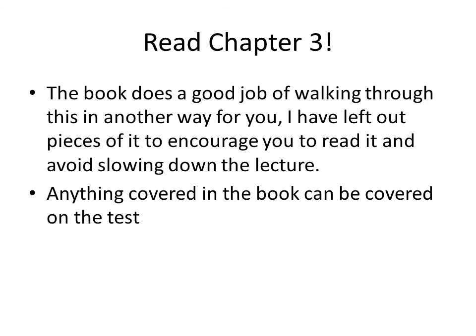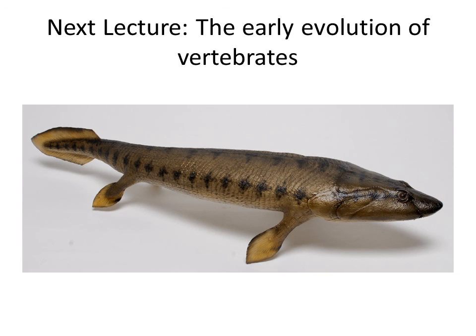If you have the book, I really encourage you to read it. The book does a good job of walking through this and covering this material again — this is a really important topic for us to understand. The material is covered in a way that students can sit down and struggle with it at their own rate. And then the next lecture will be about the early evolution of vertebrates — where do vertebrates start, what are the earliest vertebrates, and how do we actually get to a four-limbed vertebrate?